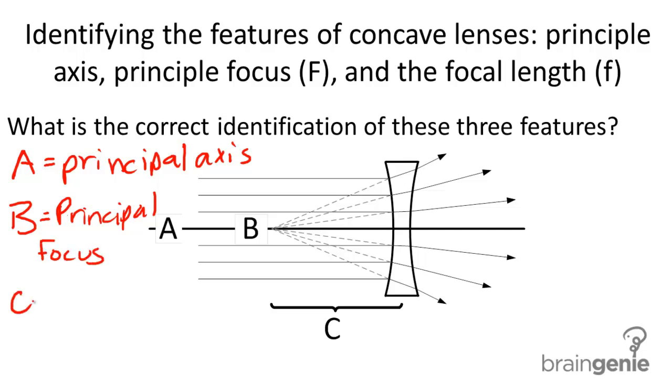And then last we have C. C is the distance between the principal focus and the midpoint or optical center of the lens. We call that the focal length.